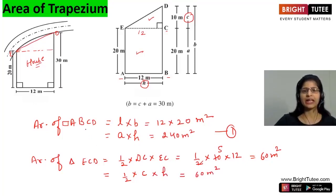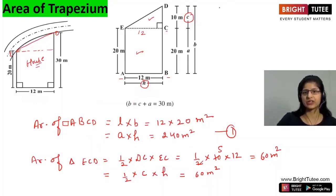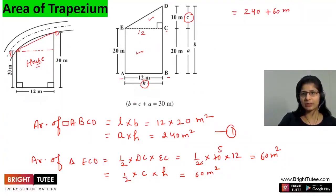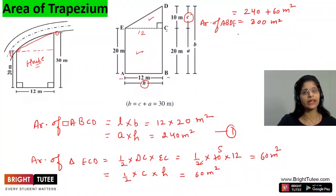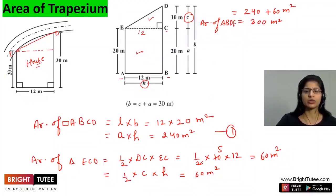If we add the area of this rectangle and the area of this triangle, we can find the total area. Adding 240 plus 60 square metres gives us 300 square metres, and this is the area of trapezium ABDE. So we have calculated the area of the trapezium numerically. Now we are going to find out a general formula.